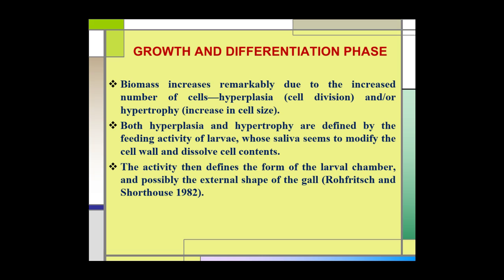The second phase is the growth and differentiation phase. In this phase, the biomass increases remarkably due to the increased number of cells. The biomass of the gall increases due to hyperplasia (cell division) and hypertrophy (increase in cell size). Both hyperplasia and hypertrophy are driven by the feeding activity of the larvae, whose saliva modifies the cell wall and dissolves cell contents. This activity defines the form of the larval chamber and possibly the external shape of the gall.